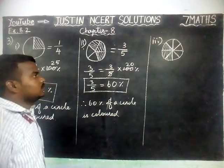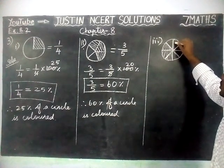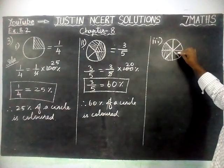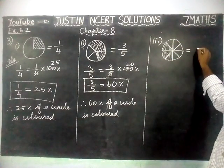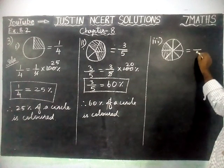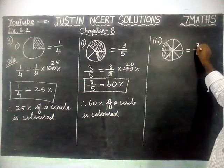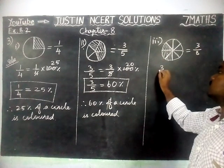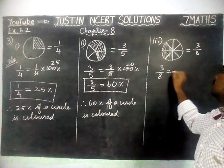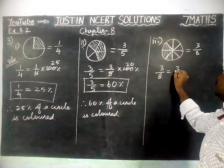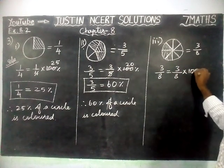Then the third part: in this circle, 1, 2, 3, 4, 5, 6, 7, 8 parts are there. Out of 8, parts 1, 2, 3 are colored. So now we are going to find the percentage: 3 by 8 is equal to 3 by 8 into 100%.